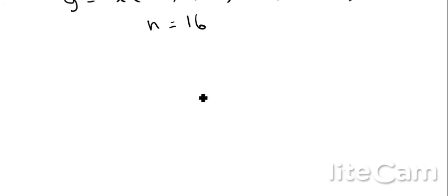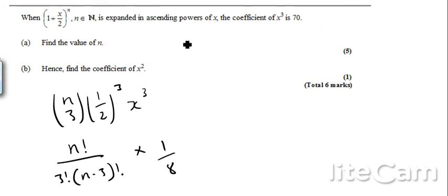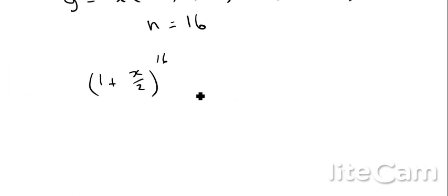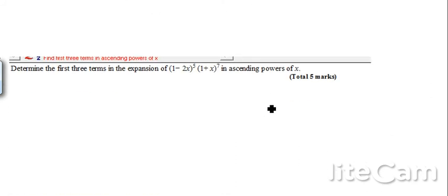And then for part b, it just reminds us what the question was. The question basically says hence, find the coefficient of x squared. So if I've basically got 1 plus x over 2 to the power 16, I need to find out the x squared term. Well, the x squared term will happen when I have 16 choose 2, and a half times 2. So that will give me the x squared term. So therefore, that will be 30. So 30 is the coefficient.